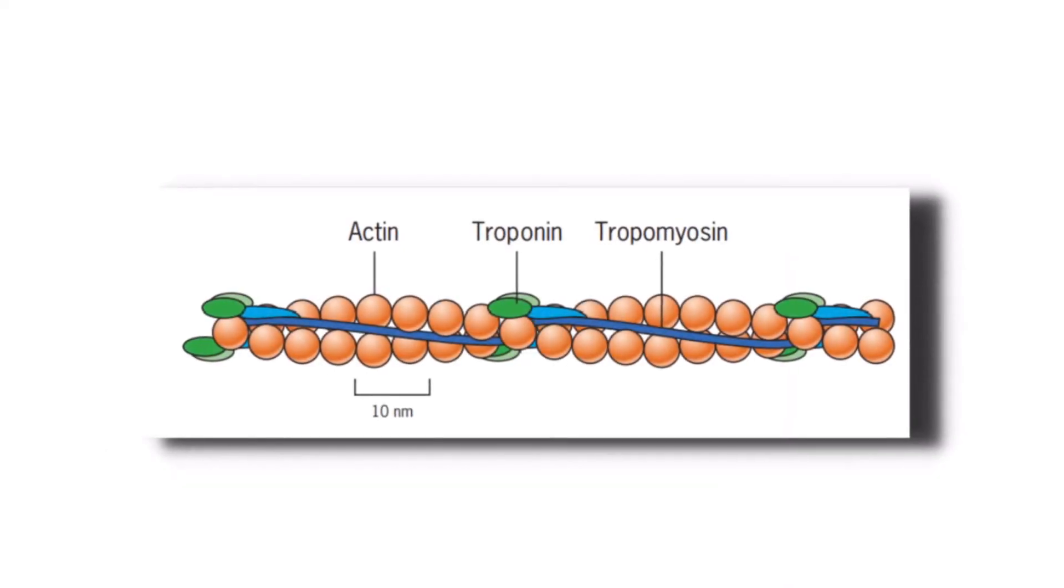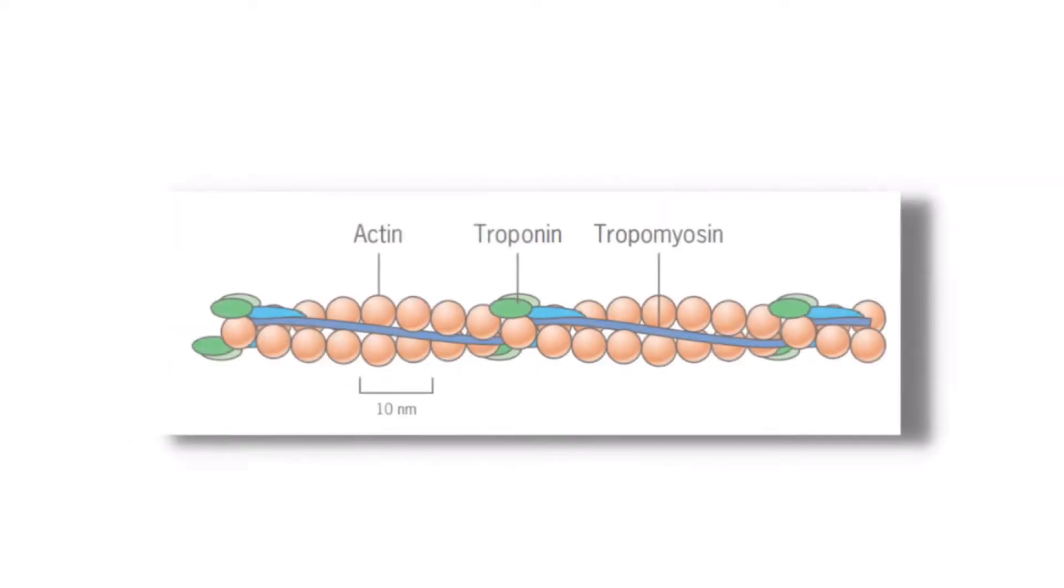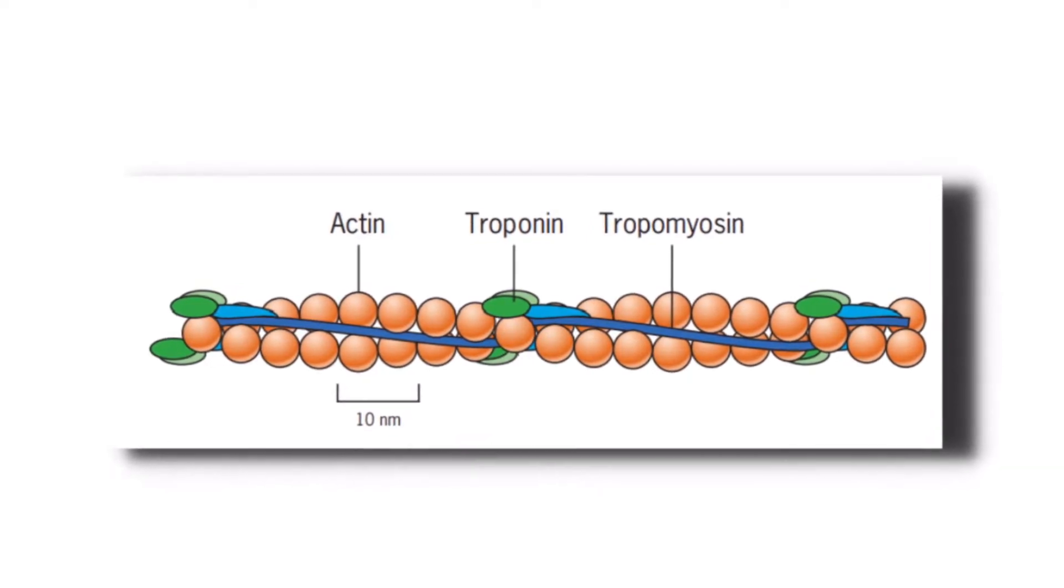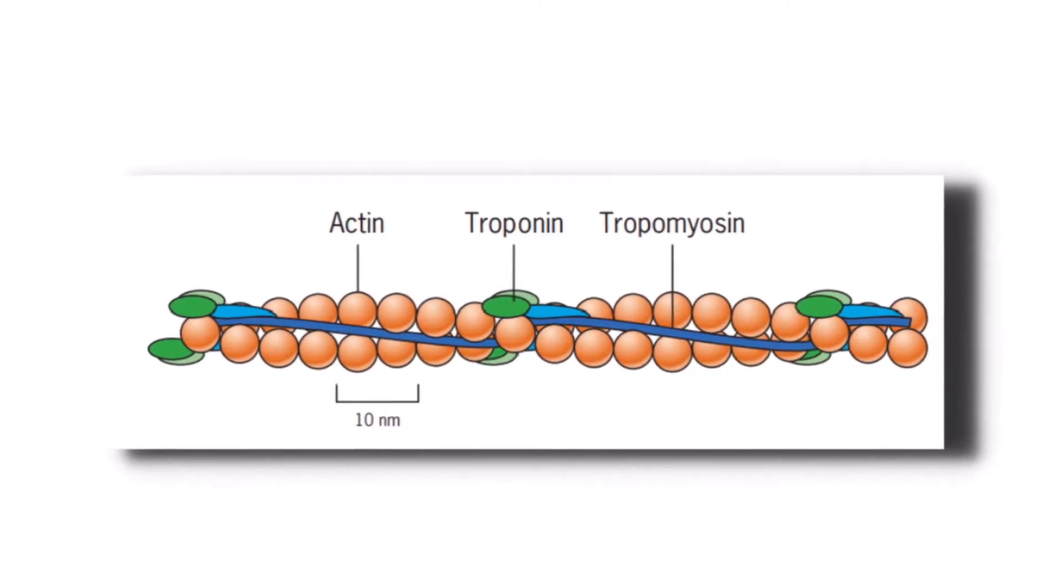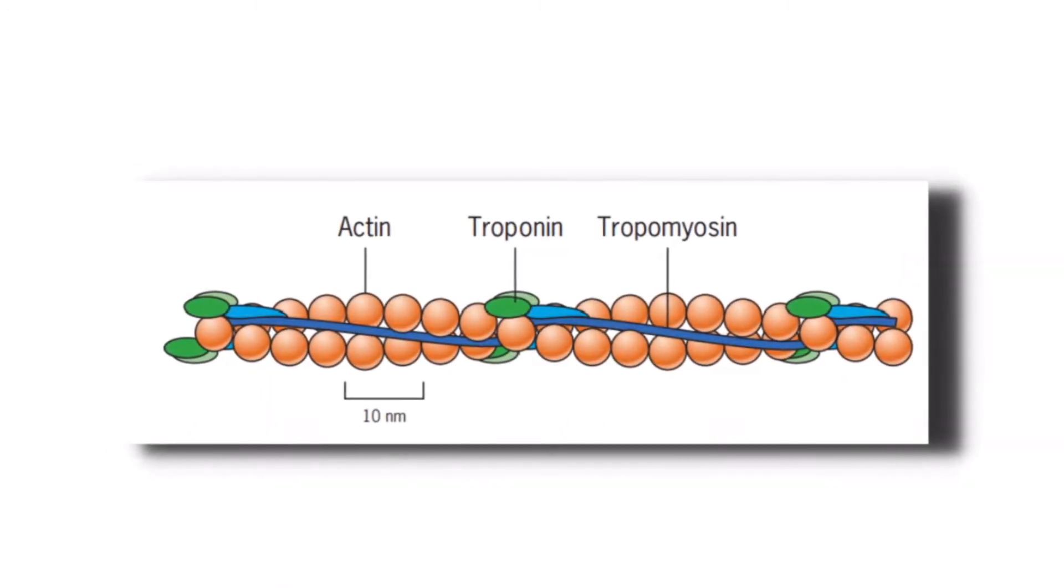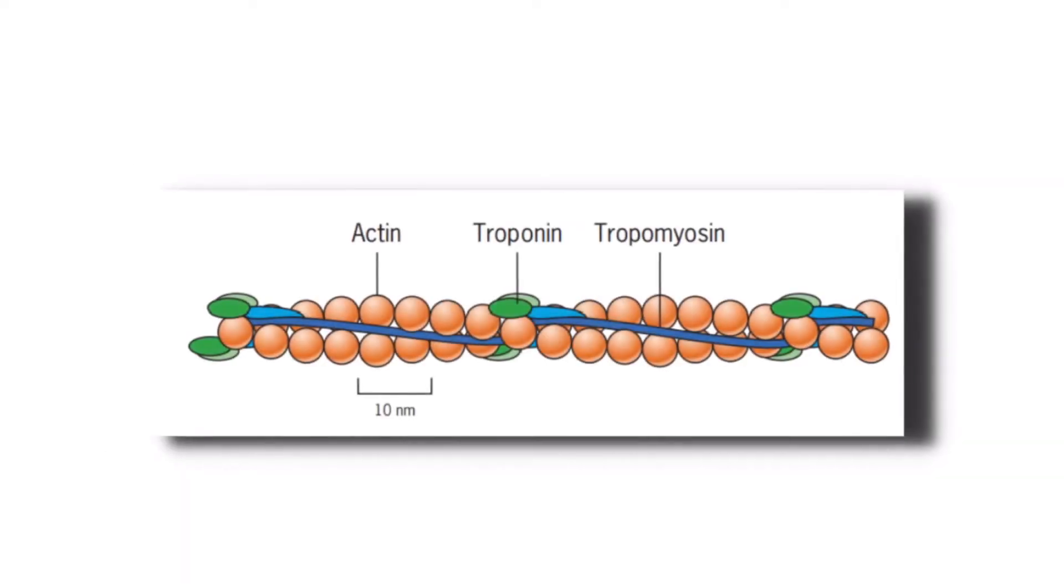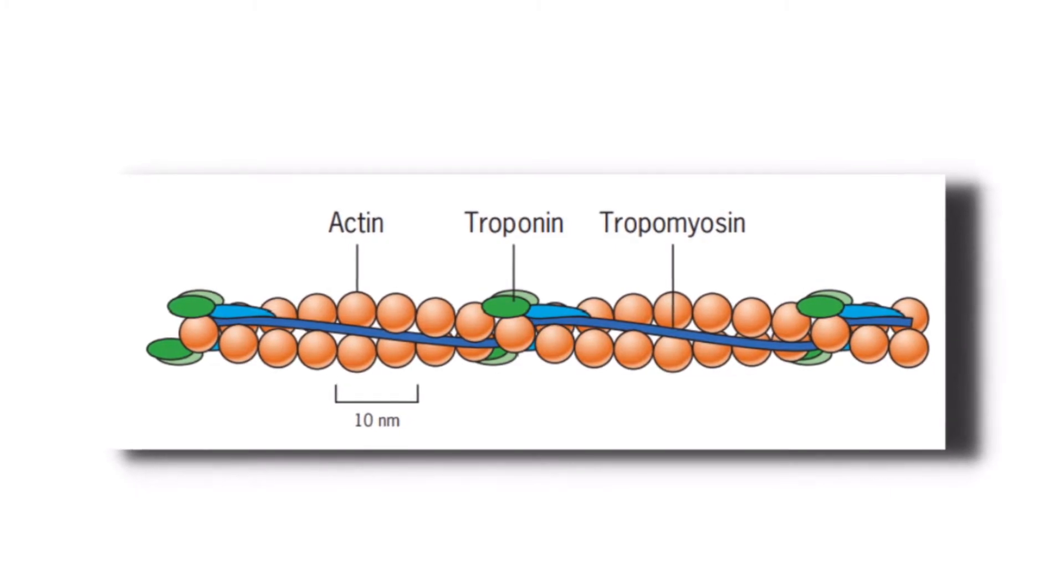The microfilaments are mostly found scattered in the cortical regions of the cell just below the plasma membrane, whereas the microtubules and intermediate filaments are found in the subcortical regions of the cell. And I've already made a video about the microtubules, and if you want to check out that video, you can click the i here at the right hand corner of your screen.